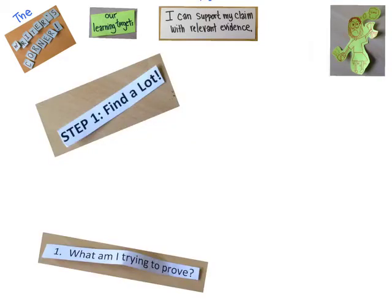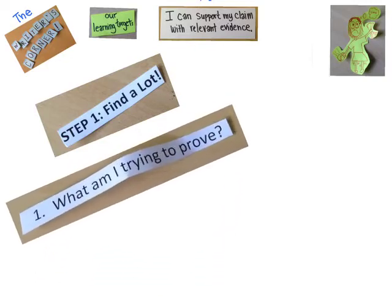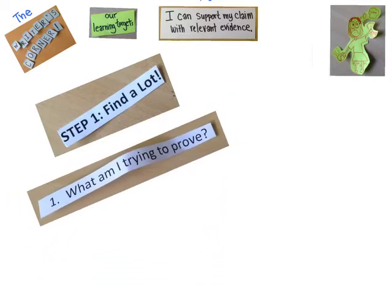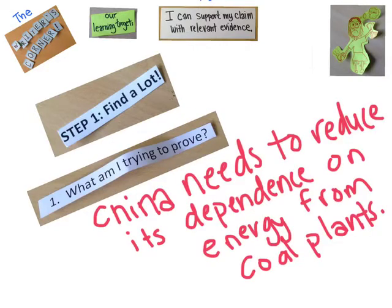The first step is finding a lot of evidence. The first thing Carol needs to ask herself is: what am I trying to prove? This is also known as your claim. Carol's claim is about coal use in China. Carol's claim is: China needs to reduce its dependence on energy from coal plants. Basically, Carol's claim is saying that coal plants in China are bad.